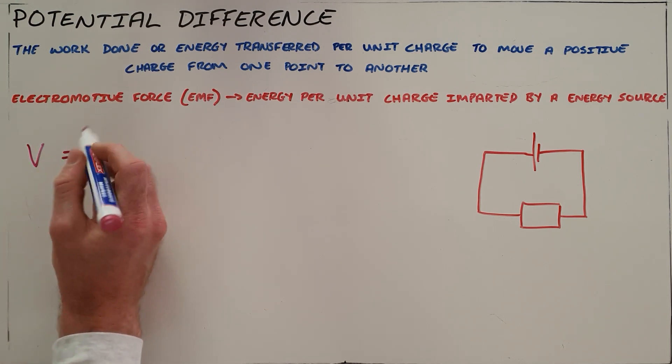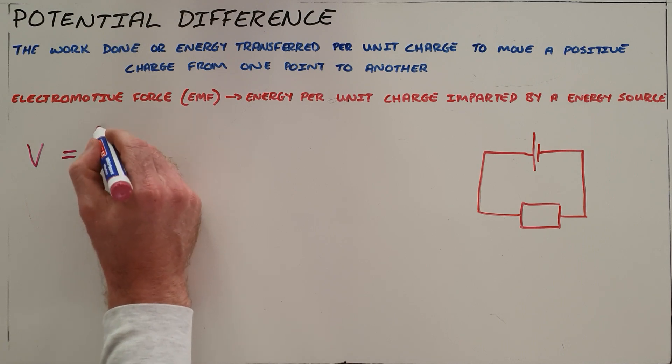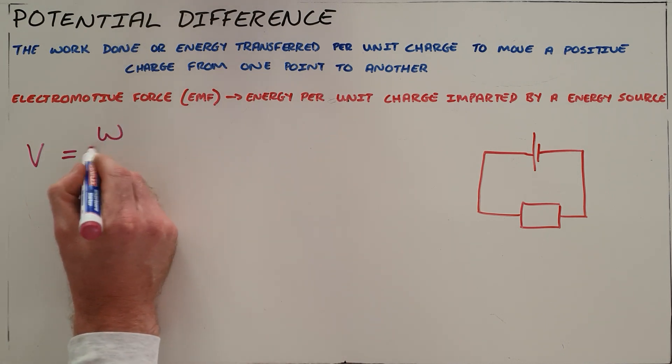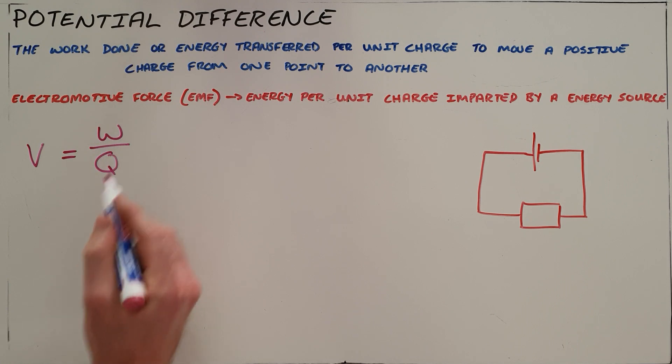We know that potential difference is the work done per unit charge, so that is the amount of work done per unit charge in moving from one point to another.